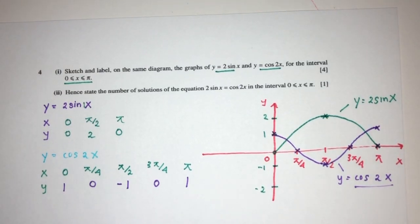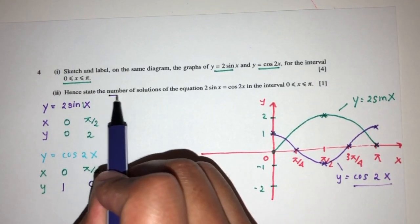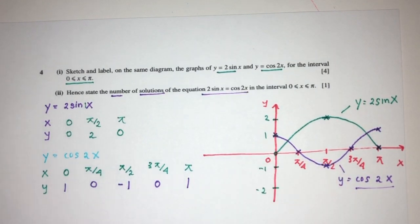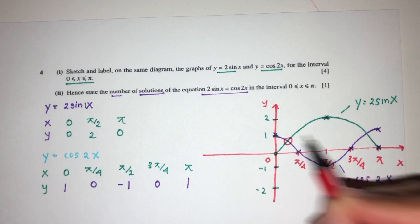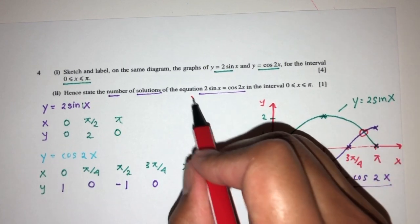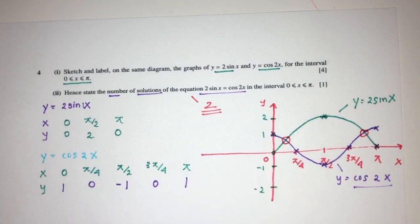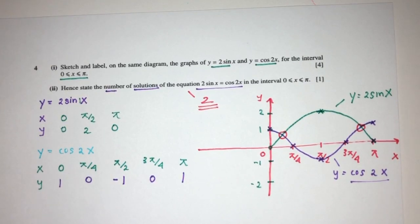Now for part two, we have to state the number of solutions of the equation. So pretty easy. You can see they meet at two points. They will have two solutions. And that will be your question in regards to trigonometry. Thank you.